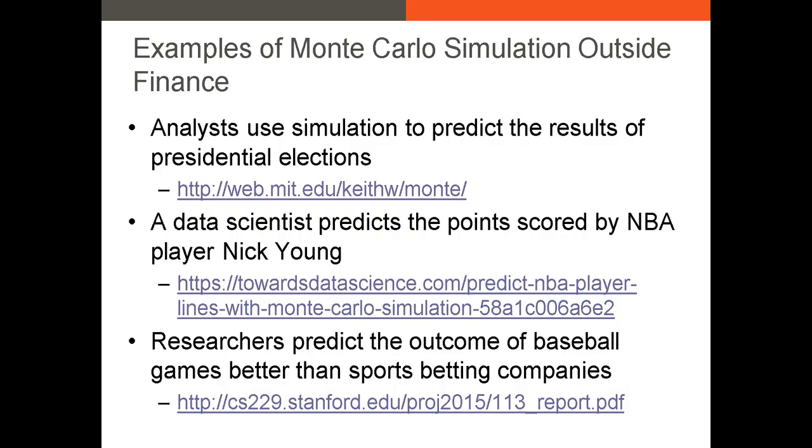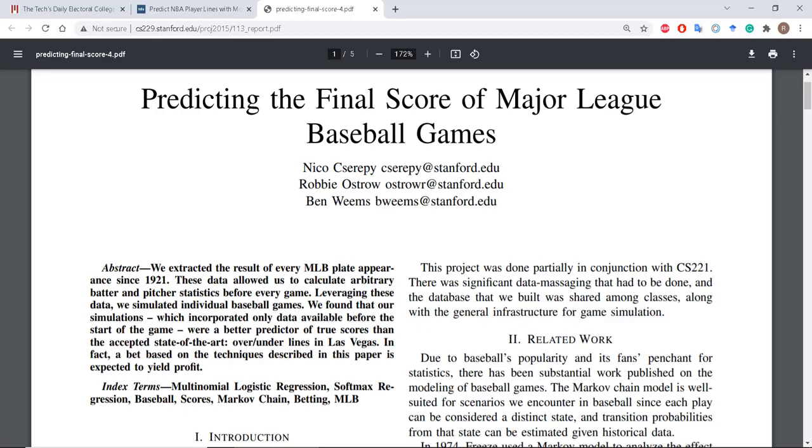Finally, there are many analysts and statisticians who use Monte Carlo simulation when they gamble. They might try to predict the spread of a game, the total points scored, or some other factor that can be bet on. This is a paper in which three Stanford researchers use simulation to predict the final scores of baseball games. They use only information available before the start of the game, and they find that they can predict scores better than the over-under lines set by casinos in Las Vegas. The over-under is the total points or runs scored in a game by both teams.